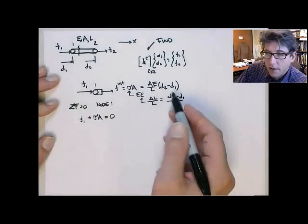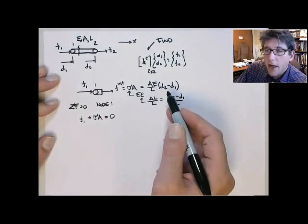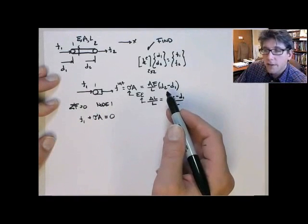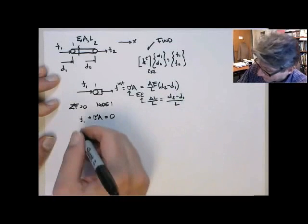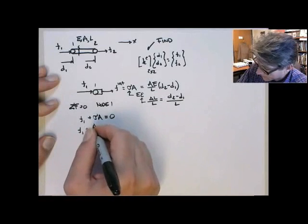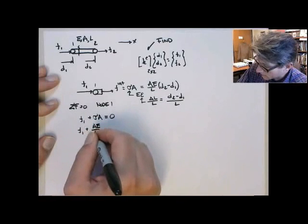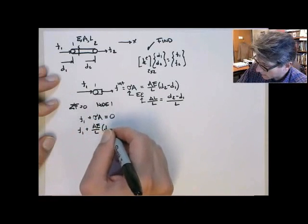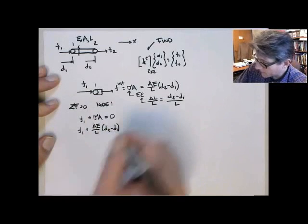Now substituting in EA over L times d2 minus d1 for sigma a, we get f1 plus EA over L times d2 minus d1 equals 0.